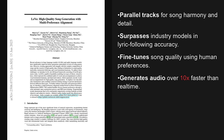The big challenge in AI music is getting everything to sound good together — the vocals, the instruments, the overall musicality. This paper introduces a framework called Levo to tackle this. It uses a special language model that processes music in two ways at once, both as a combined track for better harmony, and as separate vocal and instrument tracks for higher quality.